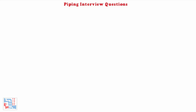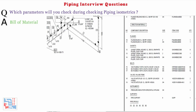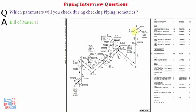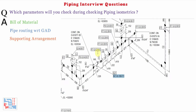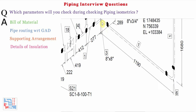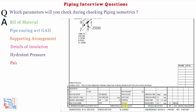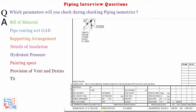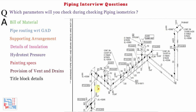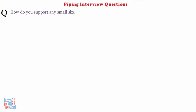First question: which parameters will you check while checking piping isometrics? Bill of material, pipe routing with respect to general arrangement drawing, supporting arrangement, details of insulation, hydro test pressure, painting specs, and provision of vents and drains at appropriate locations.